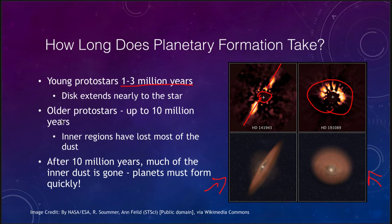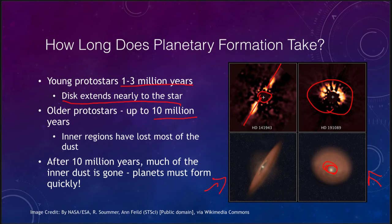In some of the older protostars, even when we get up to 10 million years old, the disk extends nearly into the star. In older protostars, as they get older, the inner regions have lost most of their dust — those inner sections are beginning to be cleared out. This must happen very quickly, because after about 10 million years the dust is gone. The material that could possibly build the planets is gone, so planet formation must occur within this 10-million-year timeframe.